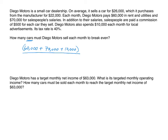For contribution margin per unit, sales price per unit is $26,000. Variable costs per unit include the $22,000 purchase price plus the $500 commission. So contribution margin per unit equals $26,000 minus $22,000 minus $500, which equals $3,500. Dividing total fixed costs of $140,000 by $3,500 means Diego Motors must sell 40 cars each month to break even.